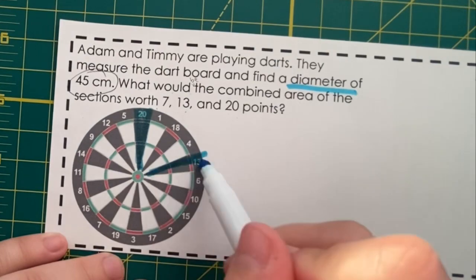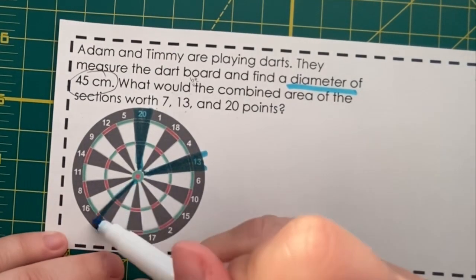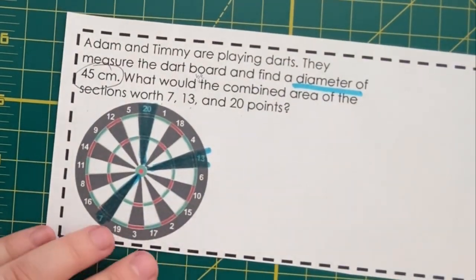Here's 13 over here. Here's 17 over here. So, that's 3 of our sections.